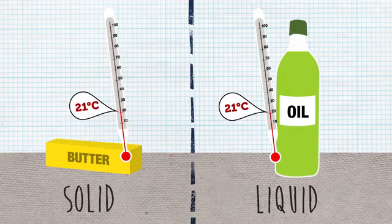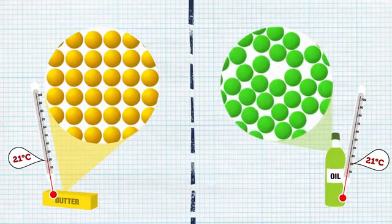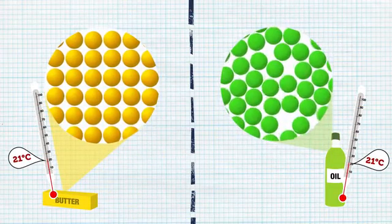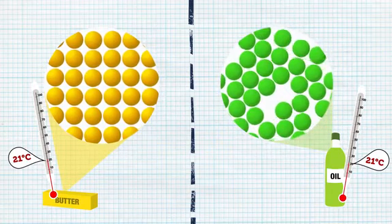Let's zoom into each substance to see what's happening. Here we can see that molecules in the butter and oil are both moving slowly. That's because they have the same average kinetic energy.